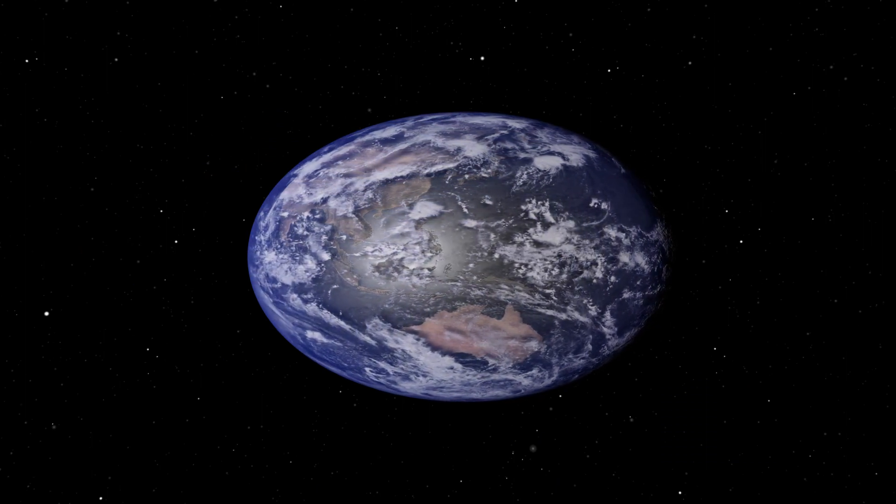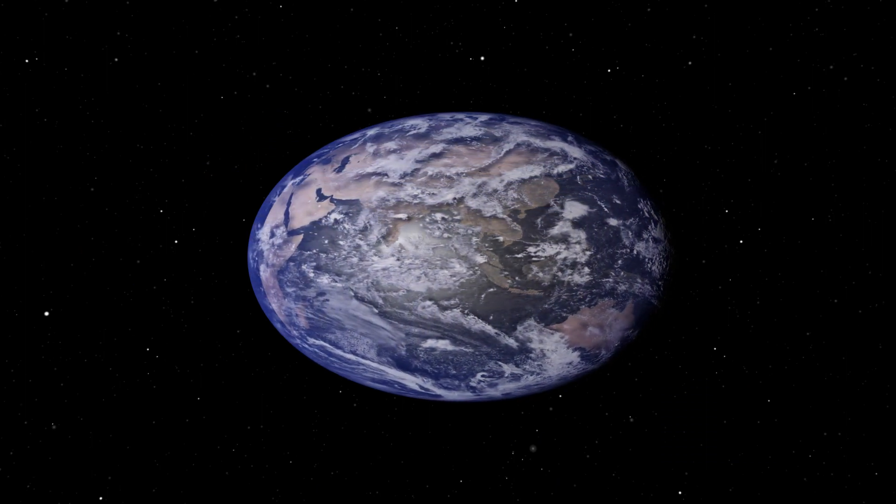Now, it's not actually squished this much. This is an exaggeration, so you can see the shape. Thank you very much for your question, Polly and Max. And now we know, the Earth is not a perfect sphere, but an oblate spheroid, or a bit of a squashed, fat sphere.